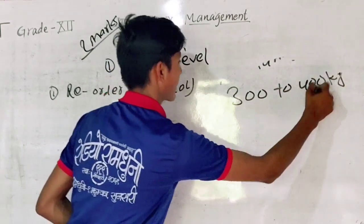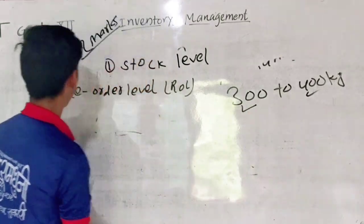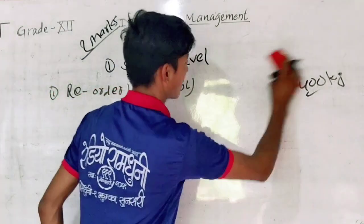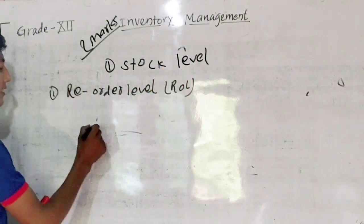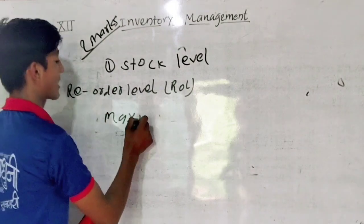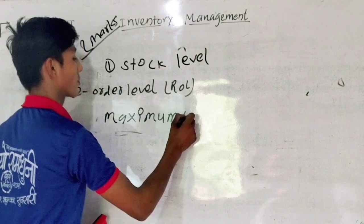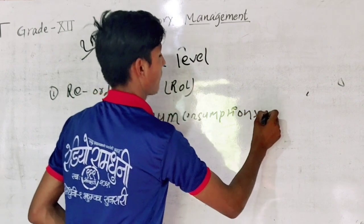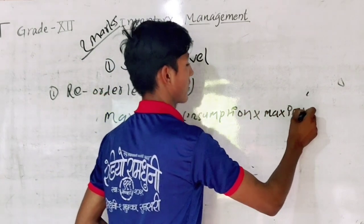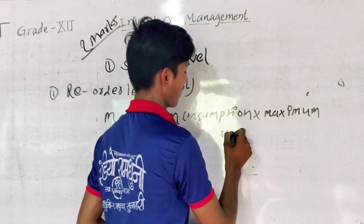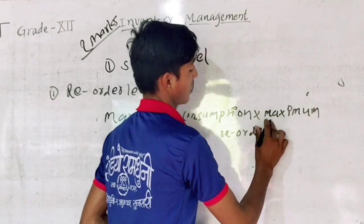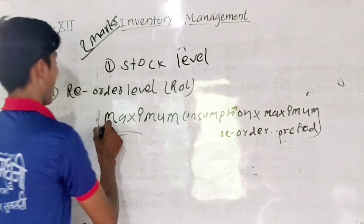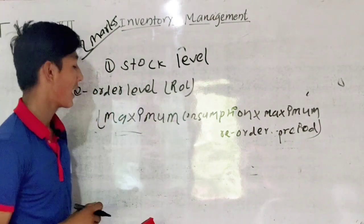Maximum money is a minimum money. I'm looking at the formula. Maximum consumption into maximum reorder period — I'm really curious about the formula. It's a good formula. The reorder level formula: maximum consumption into maximum reorder period.